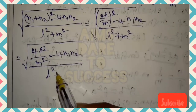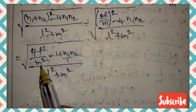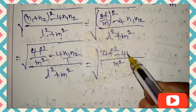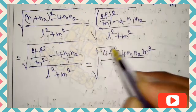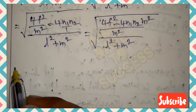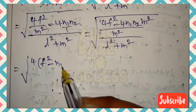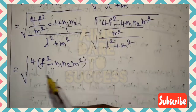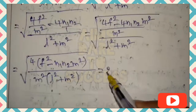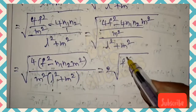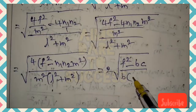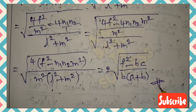Taking LCM m² in the numerator: √[(4f² − 4n₁n₂·m²)/m²] / √(l²+m²). Factoring 4 gives 2√(f² − n₁n₂·m²) / [m·√(l²+m²)]. Since n₁n₂ = c, m² = b, l² = a, this becomes 2√(f² − bc) / √[b(a+b)], completing the f-related distance proof.